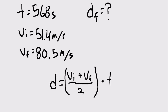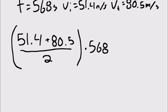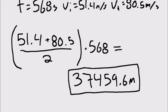To find how far the plane traveled between events B and C, we can use the equation D equals velocity final plus velocity initial over 2, times time. Now we can simply plug in our numbers to find out how far the plane traveled between events B and C. The plane traveled 37,459.6 meters between events B and C.